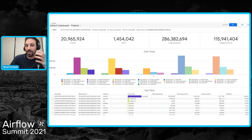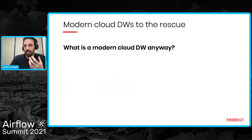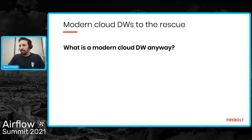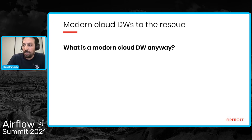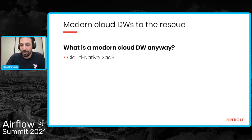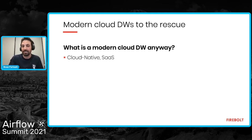Now let's go back to the theory and talk about modern cloud data warehouses and what role they play in helping us deliver data applications. Typically, data warehouses have not been the go-to technology for big data challenges — but this is starting to change. A modern cloud data warehouse is first a cloud-native SaaS data warehouse. I encourage you, if you're looking for technology to power your data applications, to go for cloud-native SaaS products — meaning not an architecture built for on-prem and transitioned to the cloud, but something built from the ground up for the cloud.